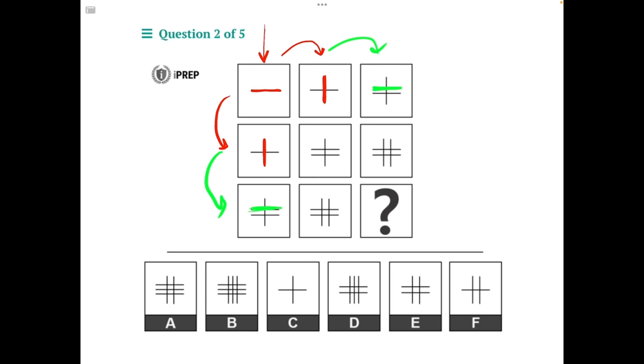So we can assume that this matrix is going to follow a pattern of logic where we are adding a line each step we go to the right or each step down, but the orientation of that line is going to alternate between being vertical and being horizontal.